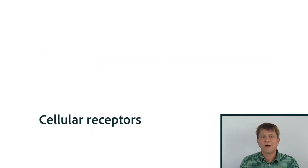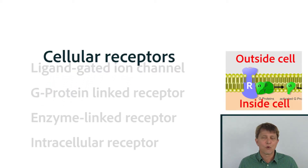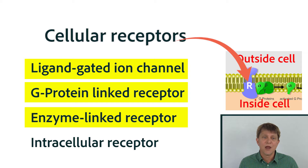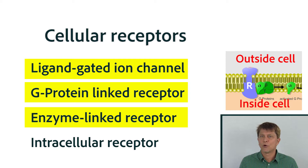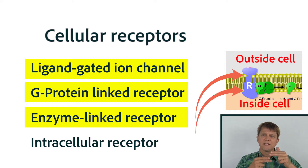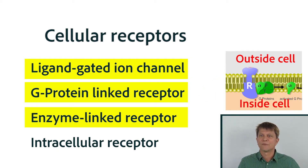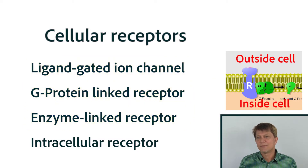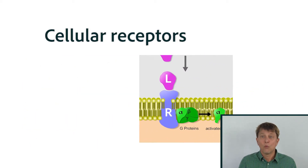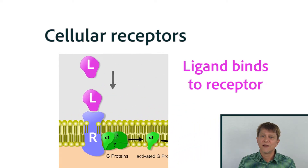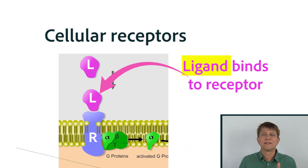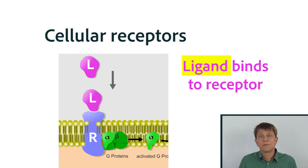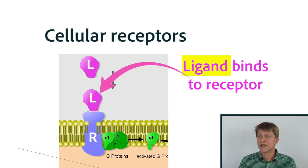Most of our cellular receptors — three of the four different types — are on the cell surface. They're transmembrane proteins. In other words, they span the whole distance of the phospholipid bilayer from the outside of the cell to the inside of the cell. And being a receptor, it's going to receive something. The thing that cellular receptors receive is called the receptor's ligand, or sometimes just ligand.